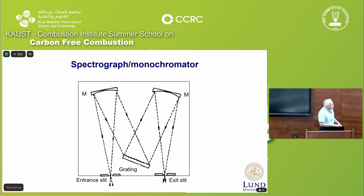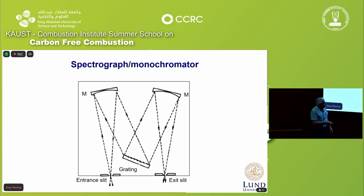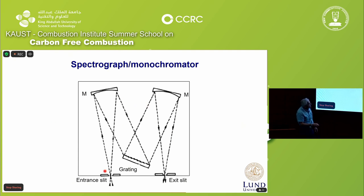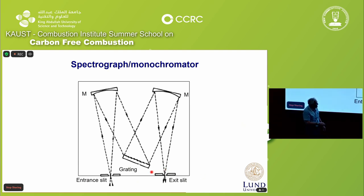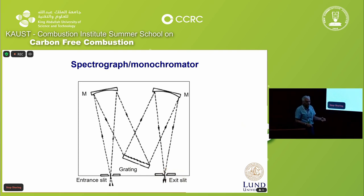To look at different wavelengths, we use a spectrograph or monochromator. You have an entrance slit where light comes from the region of interest. It goes into a mirror, is made parallel, and hits a grating which separates the different wavelengths. Out on the plane of the exit slit you get a spectrum - if you have white light coming in, you get a rainbow spectrum where you can place your detector, which could be a CCD detector or a photomultiplier.